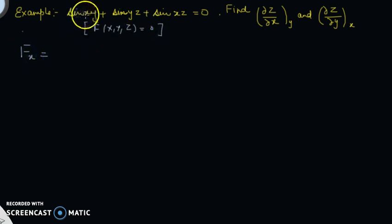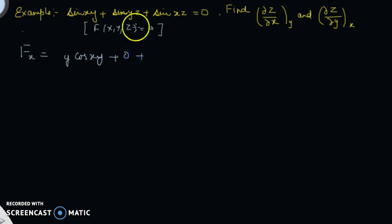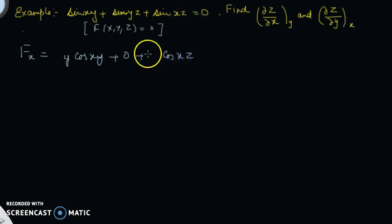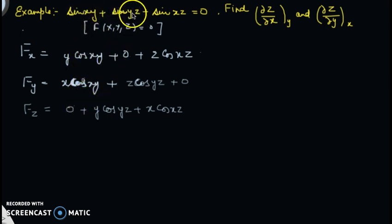For f_x: differentiating sin(xy) with respect to x, y is constant so it is like sin(ax), and the derivative is y·cos(xy). sin(yz) has no x so it contributes 0. For sin(xz), z is constant, so the derivative is z·cos(xz). Thus f_x = y·cos(xy) + z·cos(xz). For f_y: we get x·cos(xy) + z·cos(yz). For f_z: sin(xy) has no z so 0; for sin(yz), y is constant giving y·cos(yz); for sin(xz), x is constant giving x·cos(xz). So f_z = y·cos(yz) + x·cos(xz).